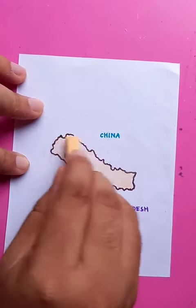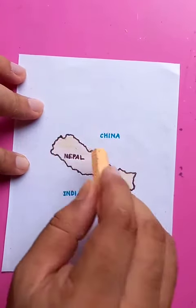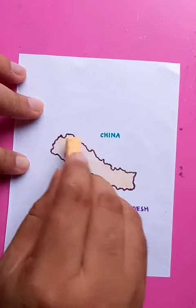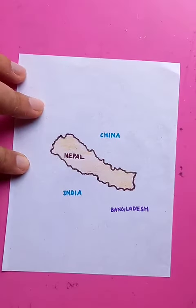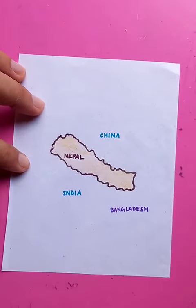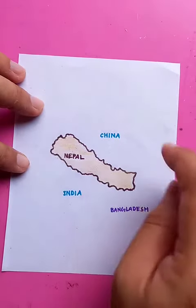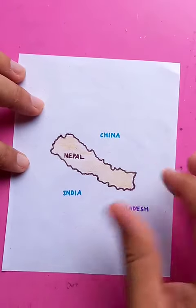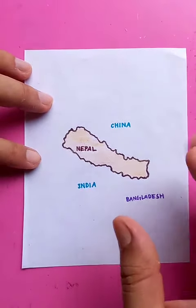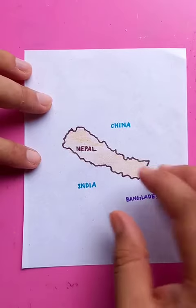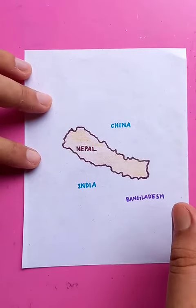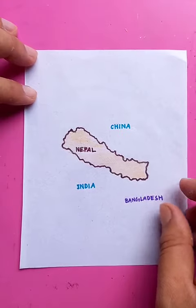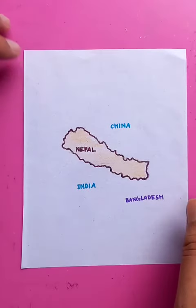Nepal is surrounded by mountains. The capital is here. This drawing is very simple and easy — just practice at home and try to memorize it. After a few times of practice the drawing will look really nice and wonderful. For more details, you can refer to a world atlas, but this is the basic shape of the country.